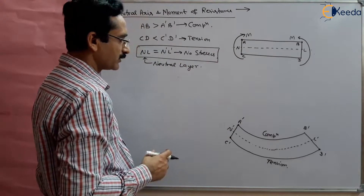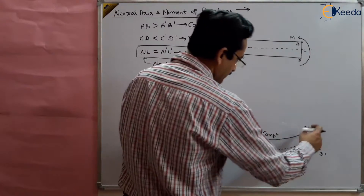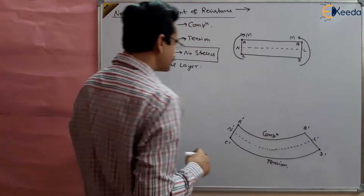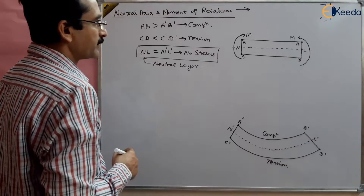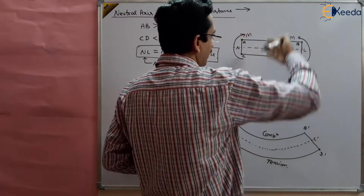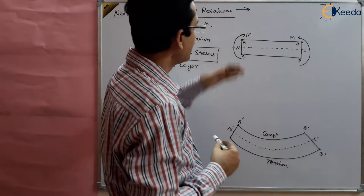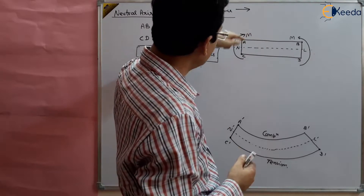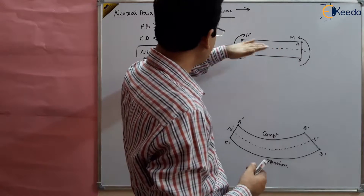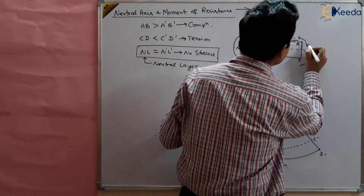So there is a neutral layer at the center, compression at the upper fiber, and tension in the lower fiber. Now, how many neutral layers are there? Because the beam has some width inside, there are infinitely many neutral layers. Let us look at its transverse section.